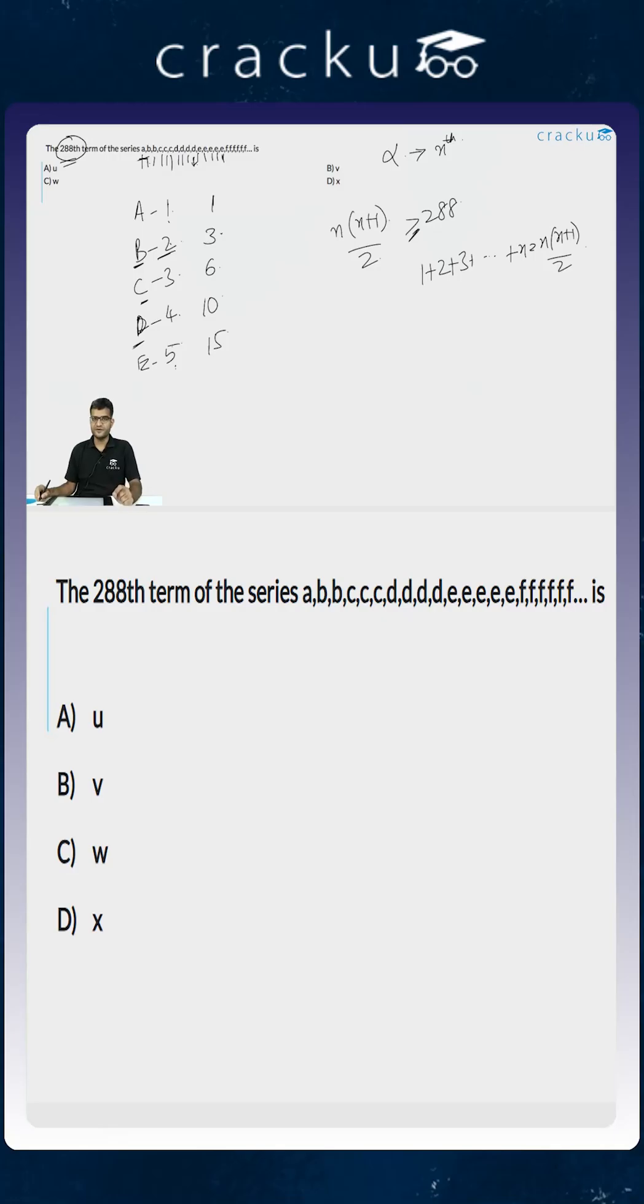So what is the smallest value of n such that n into n plus 1 by 2 is greater than or equal to 288? You can try by guessing. If you put n to be equal to 20, then n into n plus 1 by 2 is 20 into 21 divided by 2, which is equal to 210.